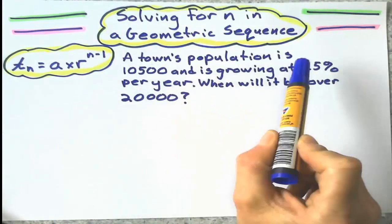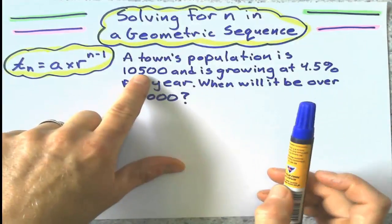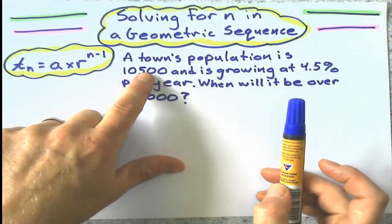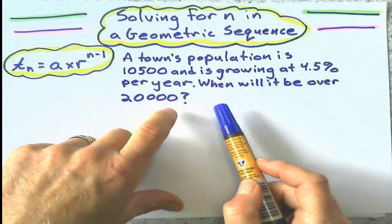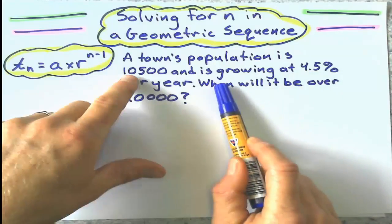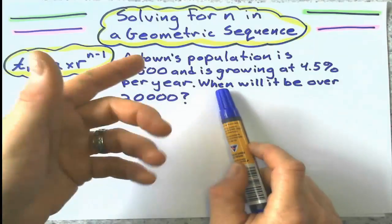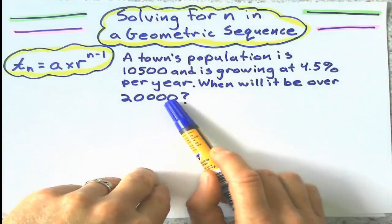We've got the town's population starts at 10,500. That's our starting point. And it's growing at a rate of 4.5% per year. When, meaning n, after how many years, will it be over 20,000?